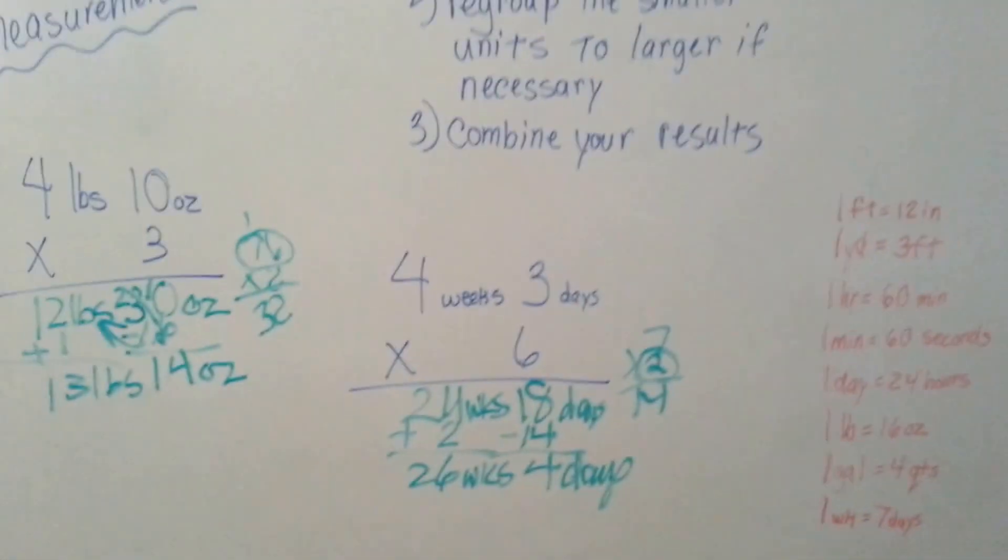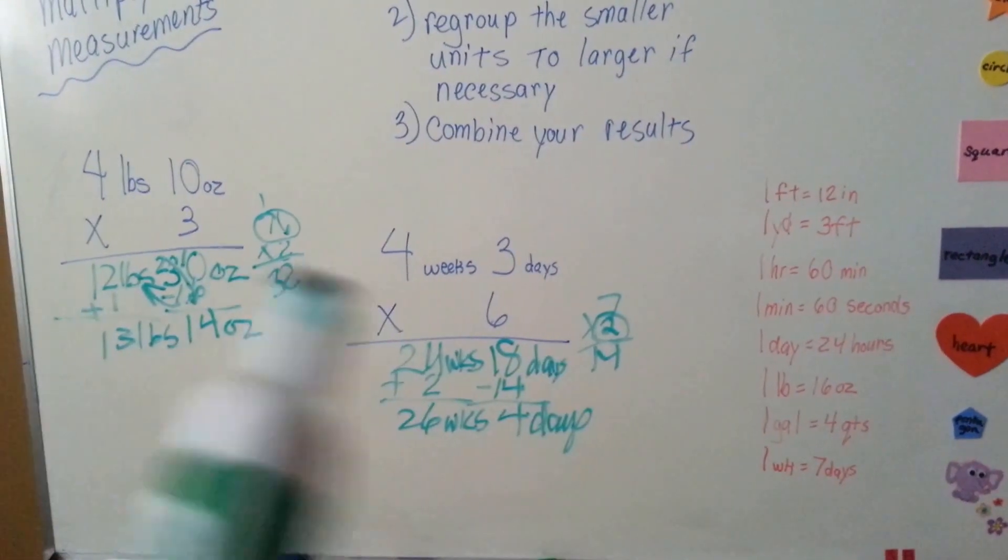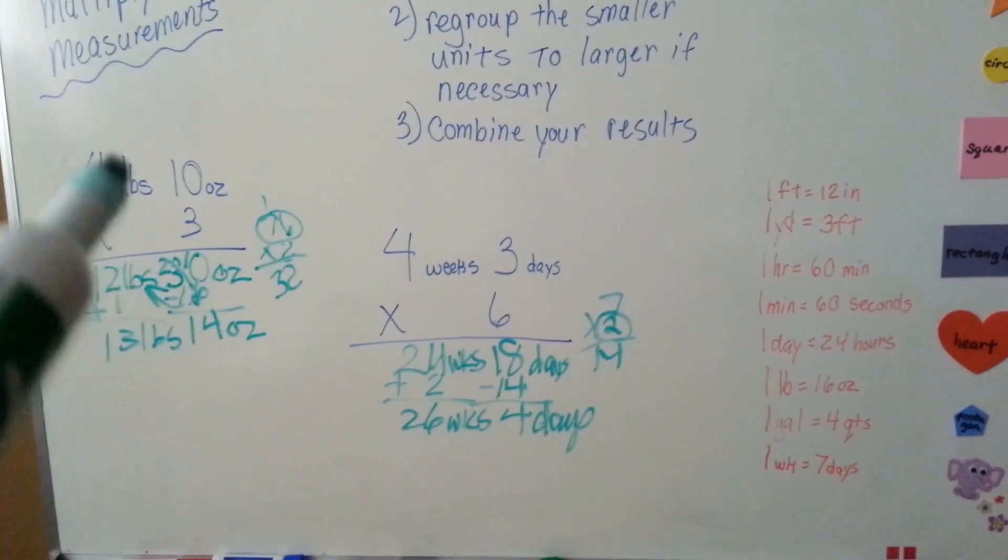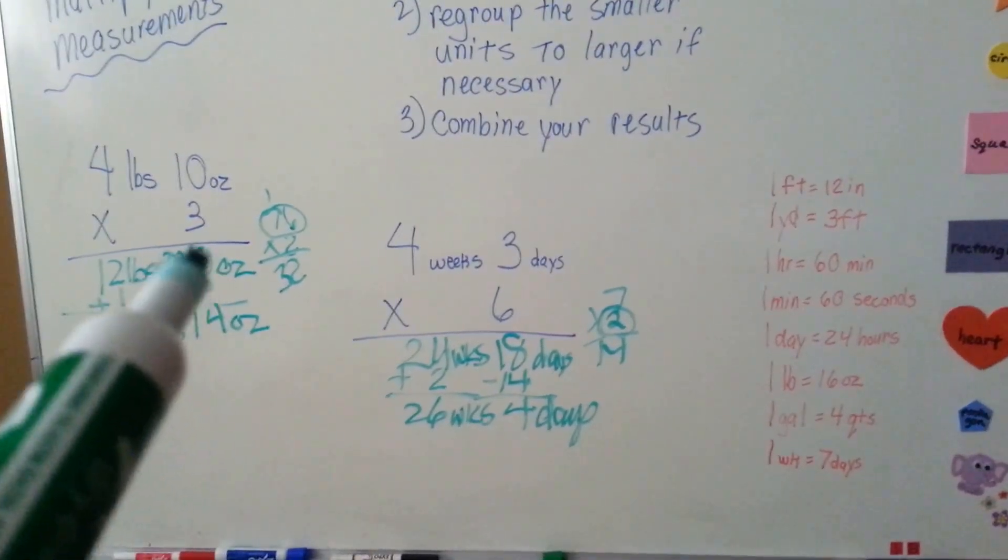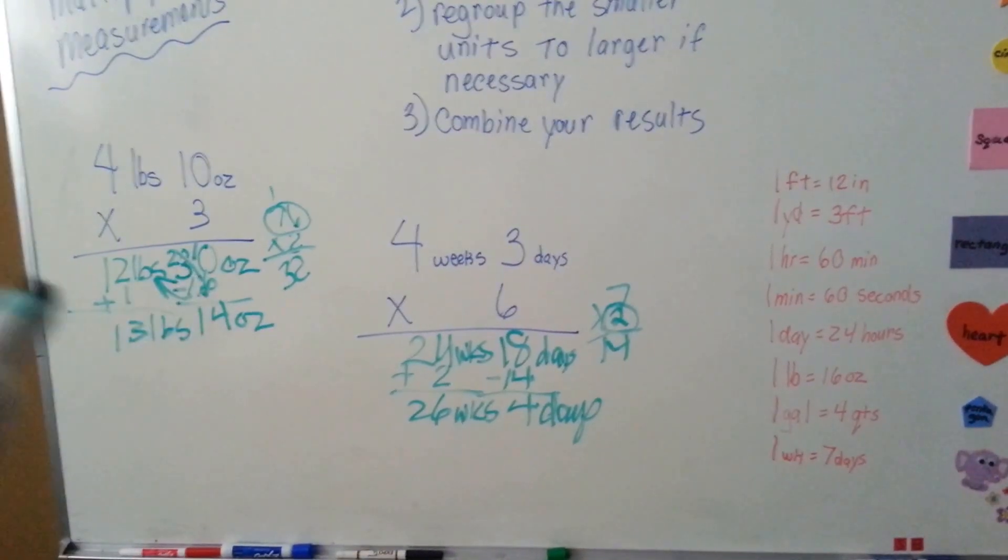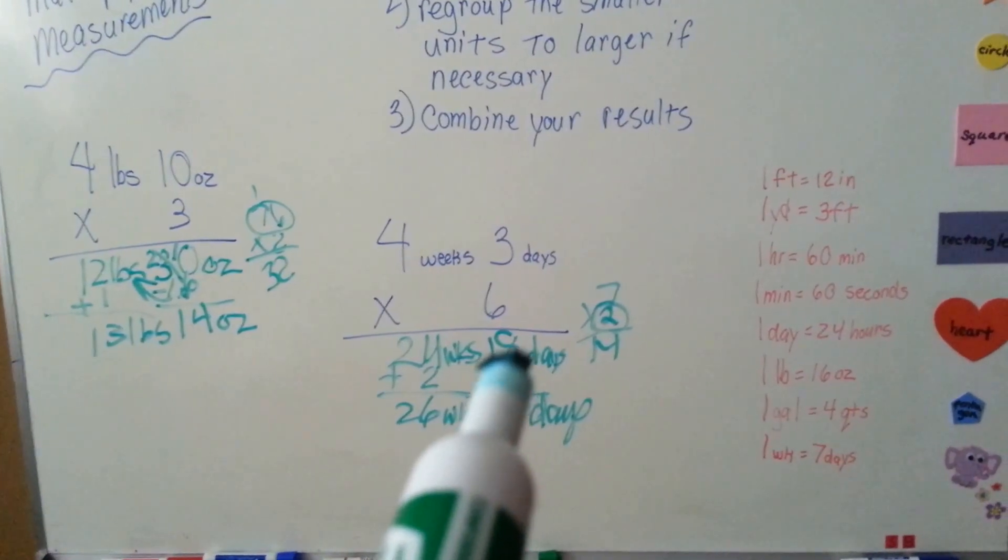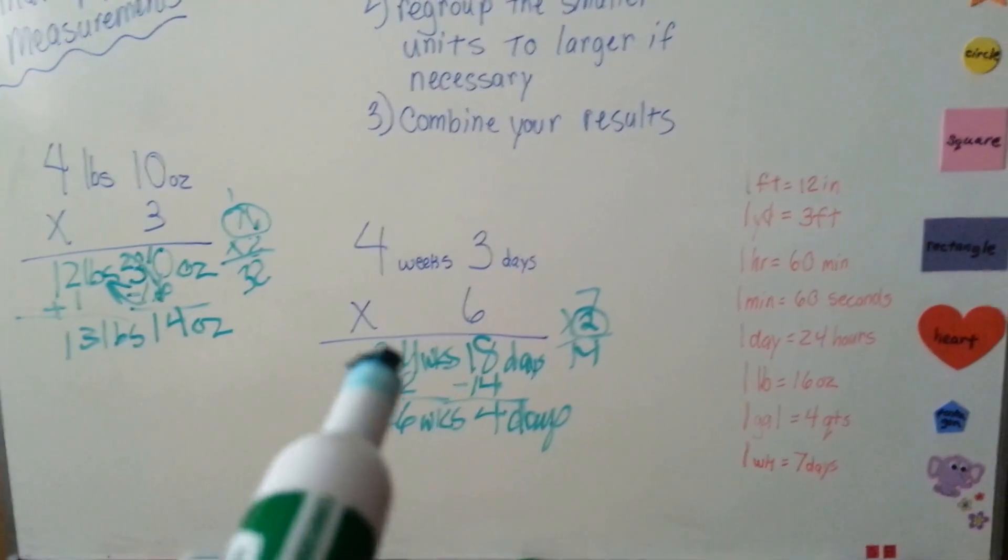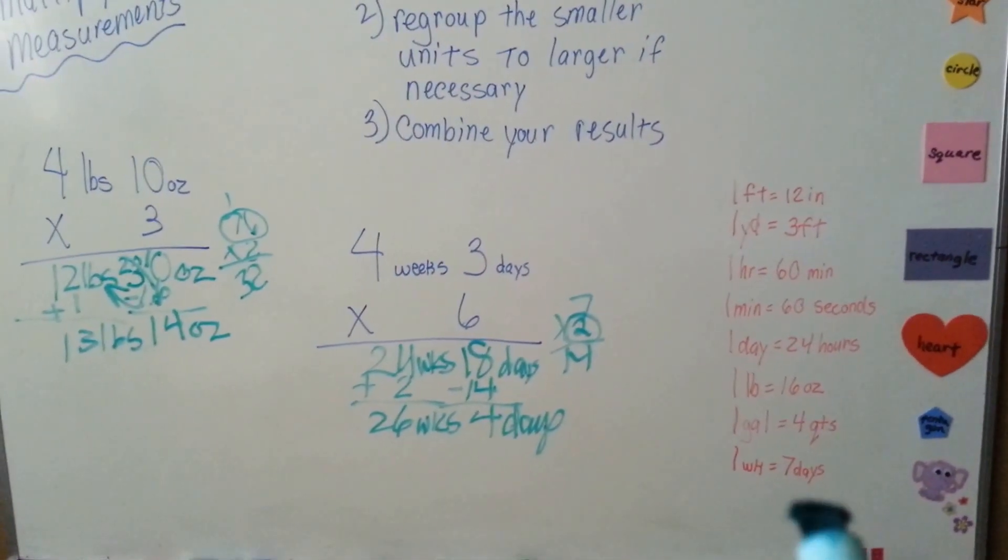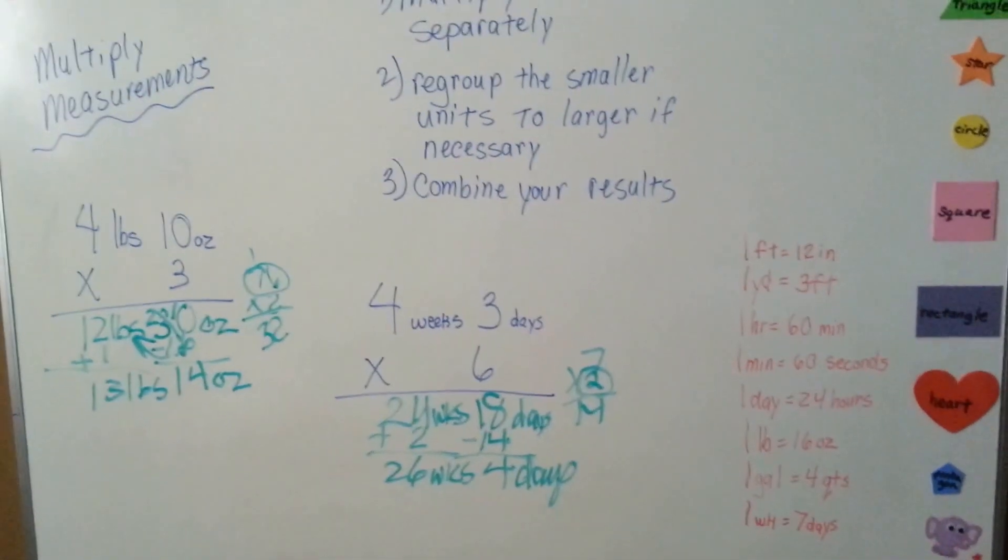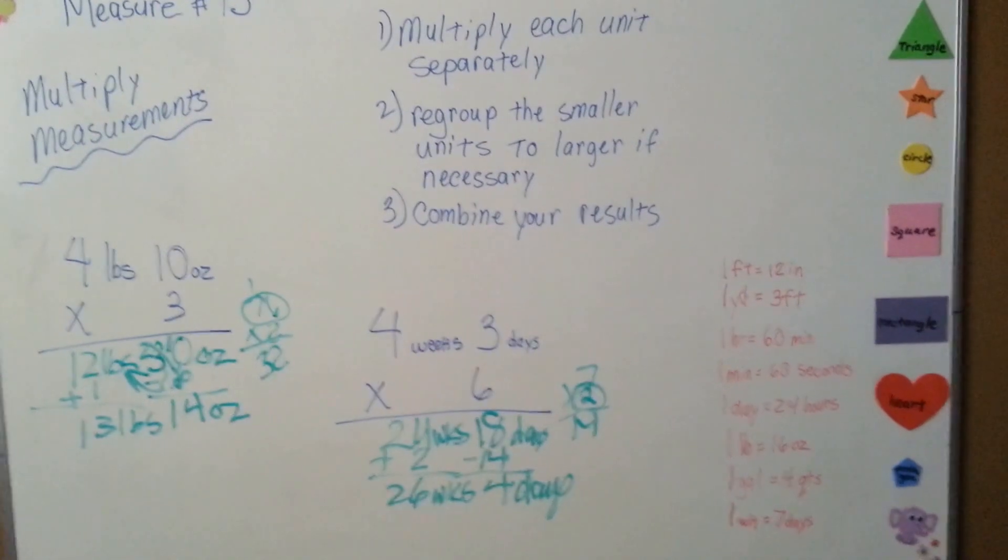So whenever you multiply measurements, make sure that you do the conversion at the end to make sure they're grouped correctly. If you're doing ounces, you can't have more than 15 ounces on the ounce side because 16 would then make it a pound. And if you're doing weeks and days, you can't have 7 days or more on this side because it would become another week. Keep your conversion chart close to you, use it, and regroup your answers. That's how to multiply measurements.